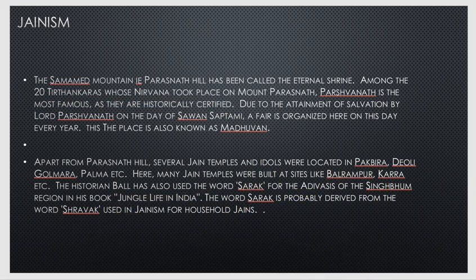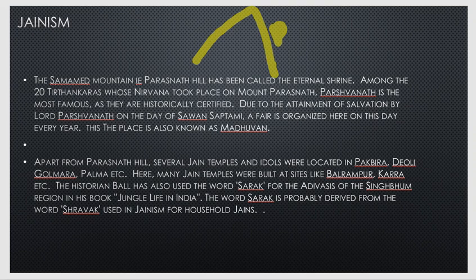That's the overview of Jainism in Jharkhand. Evidence was found in the sources of Jainism. Mainly, there is Parsnath, which is the highest hill here. Parsnath is related to Jainism — it is the topmost hill — and the 23rd Tirthankara attended Parsnath. It is the main center of Jainism.